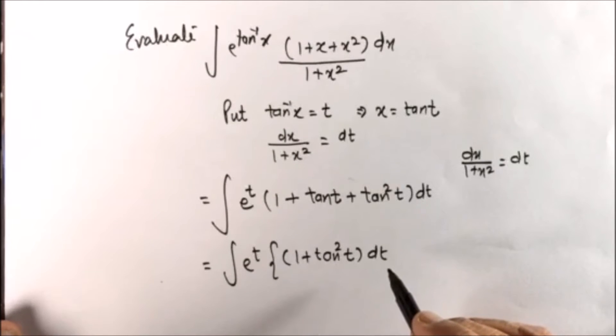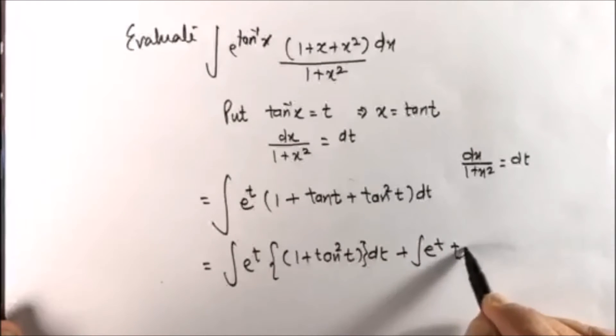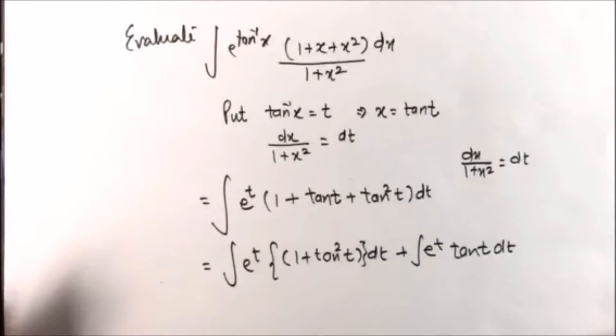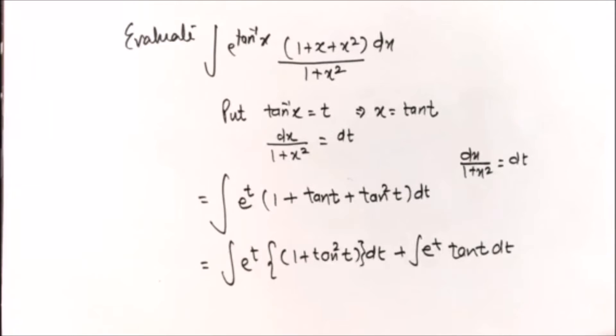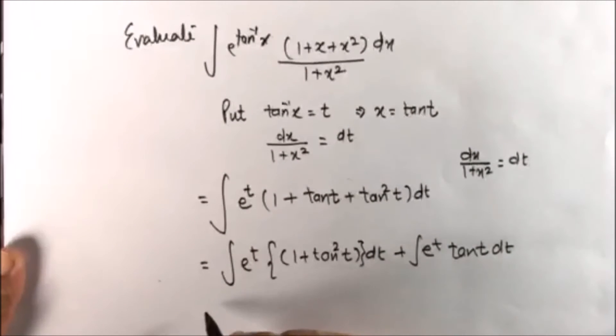Because 1 plus tan squared t will be secant squared t, and the integration of secant squared t is tan t, and the derivative of tan t is secant squared t. So you can see a strong connection between the two.